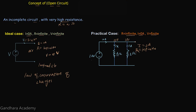All the potential difference will appear across the terminals of this open circuit. If the positive terminal has a potential of 10 volts and the negative terminal has a potential of 0 volts, then 10 volts will appear on the upper terminal and 0 volts on the bottom terminal of this open circuit. So the potential difference — the voltage across the open circuit — will be 10 volts, which is finite. So for the practical open circuit, the voltage is finite.